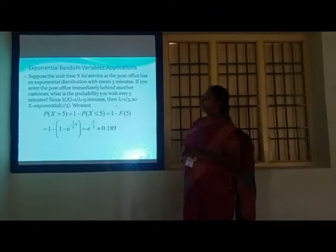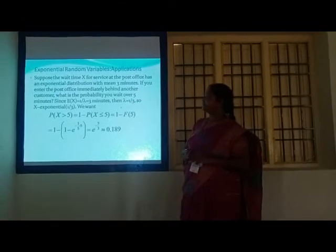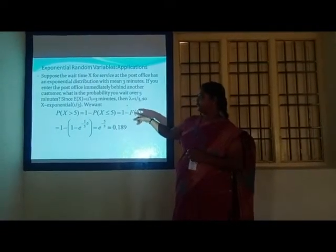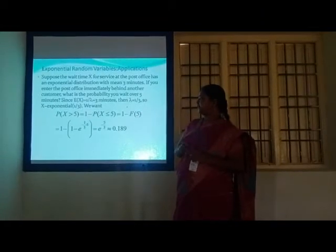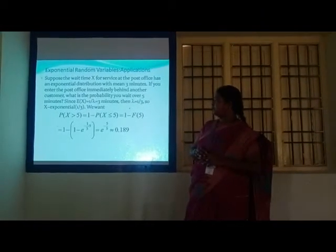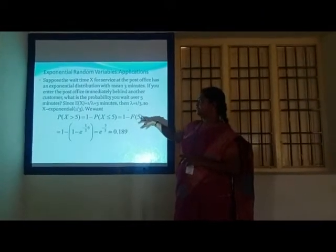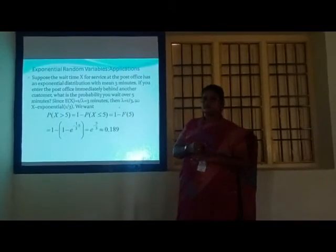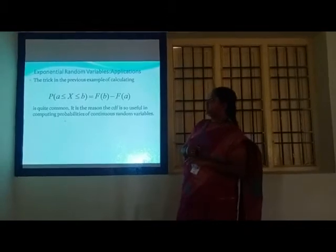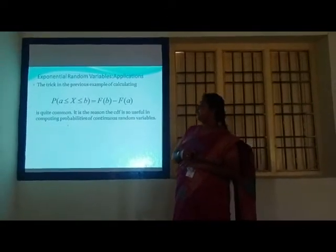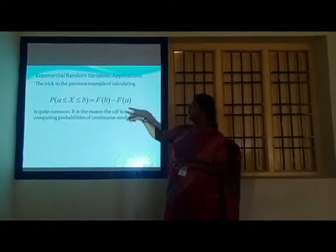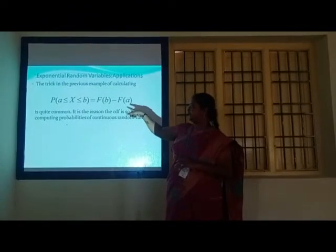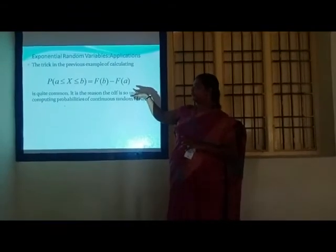Exponential random variables applications: the formula P(X > y) = 1 − P(X ≤ y) = 1 − F(y), where F is the cumulative distribution function. Also, the probability that a ≤ X ≤ b equals F(b) − F(a).